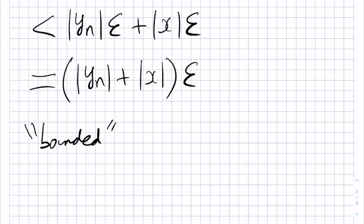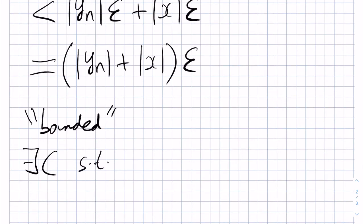We want to use this result for the sequence Yn, and so we have that Yn is bounded since it is convergent, and this means that there exists a value C, such that the modulus of Yn is less than C for all values of n.